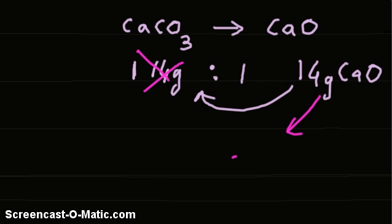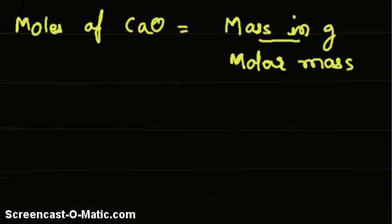We need to establish the ratio in terms of moles. So, moles of calcium oxide equals mass in grams divided by molar mass. The mass is 28, which is our yield, divided by the molar mass.